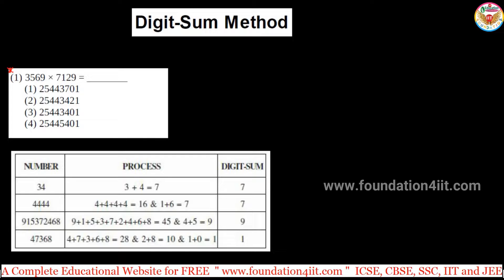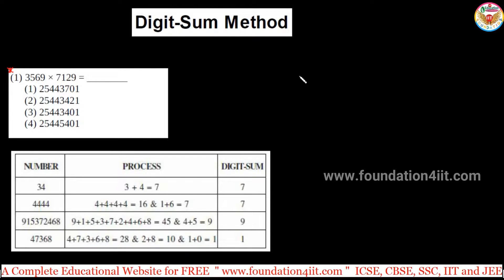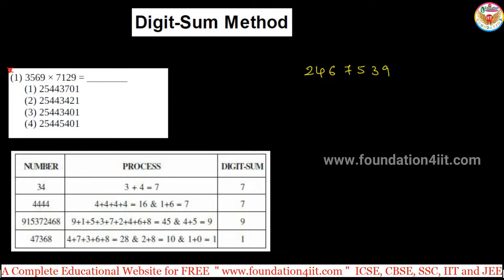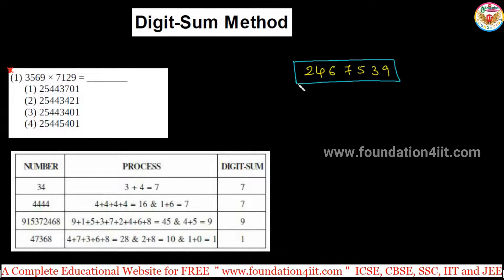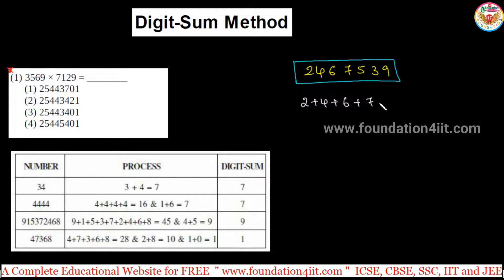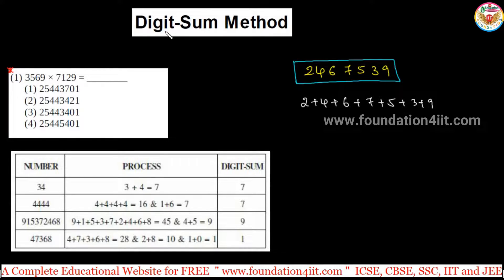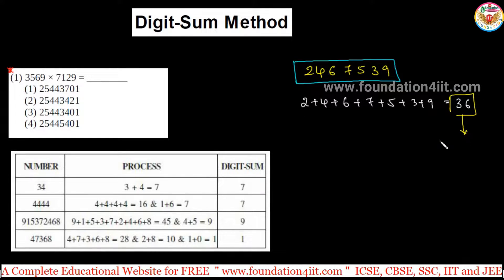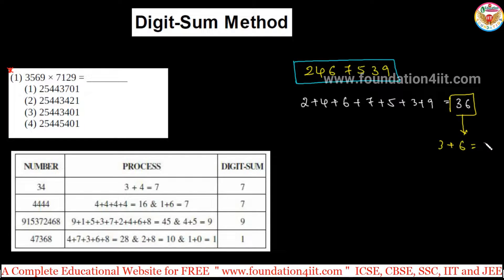We need to know this digit sum concept. Let us take any number, for example 2 4 6 7 5 3 9. To find the digit sum, we add all the digits: 2 plus 4 plus 6 plus 7 plus 5 plus 3 plus 9. Adding all gives 36. Again, until you get a single digit, continue the addition — 3 plus 6 equals 9. So the digit sum of this number is 9.